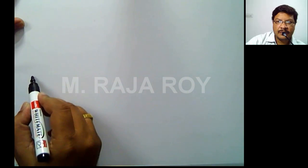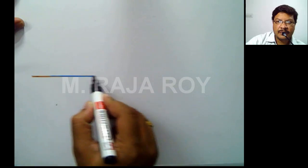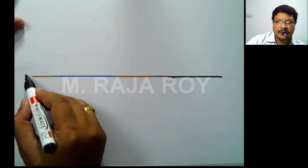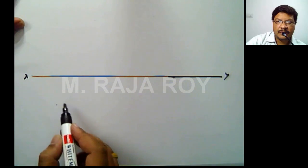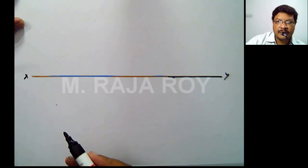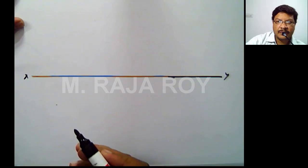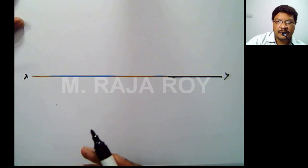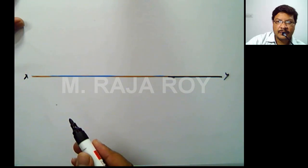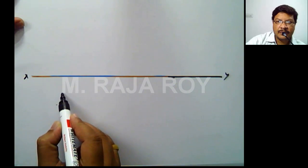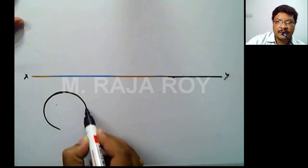The first initial step is to draw the reference line XY — this is X, this is Y. Now I will take the inclination with respect to HP initially. When the surface is inclined to HP, according to standard procedure you have to keep the surface parallel to HP. When the surface is parallel to HP you will get the true shape and size in the top view. So start the problem from the top view, and I will draw the top view of the circle.